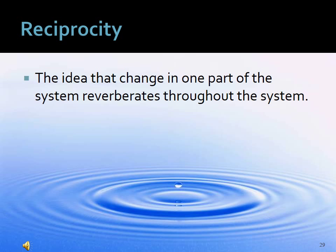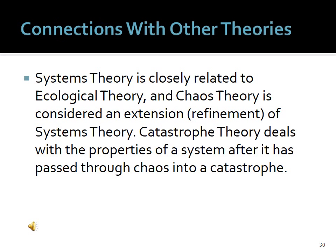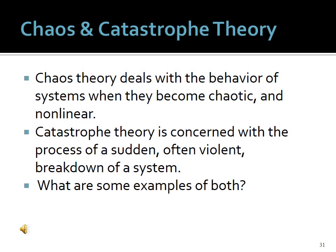Systems theory is closely related to ecological theory, and chaos theory is considered an extension or refinement of systems theory. Catastrophe theory deals with the properties of a system after it has passed through chaos into a state of catastrophe — concerned with the process of a sudden, often violent breakdown of a system. Chaos theory deals with the behavior of systems when they become chaotic and non-linear, though a detailed discussion is beyond this lecture. Pause and think about what might be some examples of systems that have gone into a state of chaos or catastrophe.